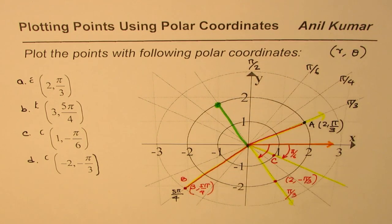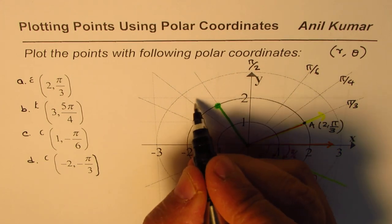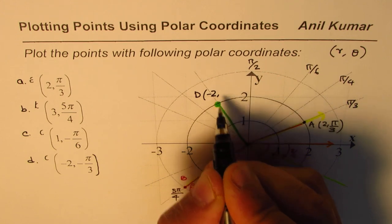So the point on the other side will be (-2, -π/3). So this point is our point D, which is (-2, -π/3). I hope that is clear.